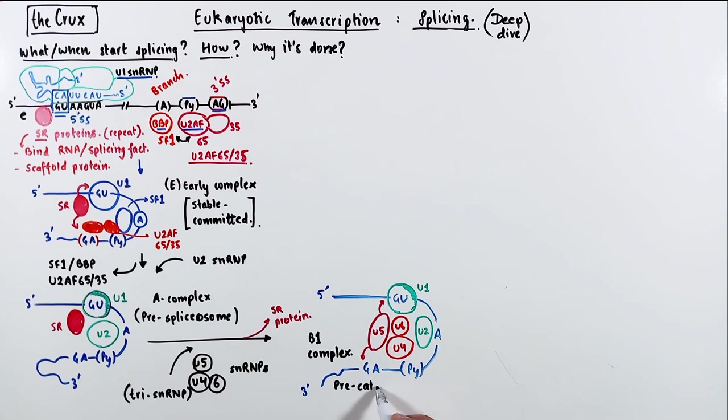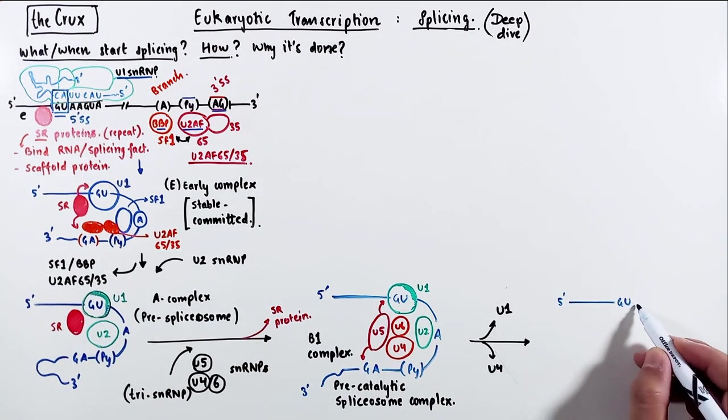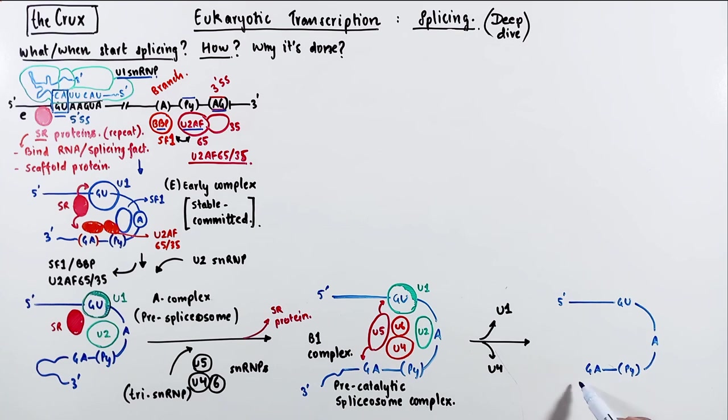And this complex is called the B1 complex, which is also known as pre-catalytic spliceosome complex. Now, to make it catalytically active, the U1 and U4 proteins are kicked out of this complex.